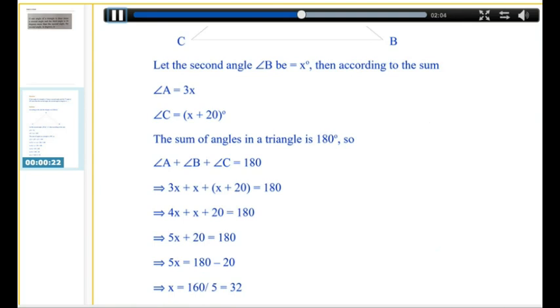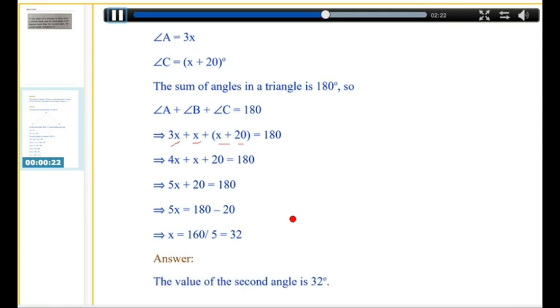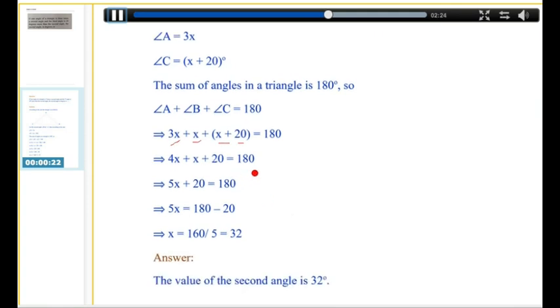We put the values of the angle over here. That is, angle A we have 3x over here. Angle B we know is x, and angle C is x plus 20, which gives us 180 degrees.